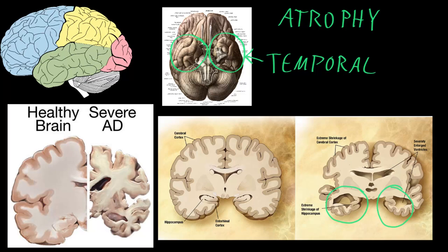Later, atrophy develops in many cortical areas of the temporal lobe, the parietal lobe, and the frontal lobe. So widespread cortical areas of the cerebrum develop atrophy as the disease progresses, and these other areas that atrophy are known to be important for many of the other cognitive functions that are typically affected by the disease.